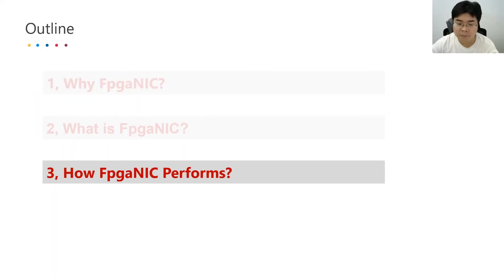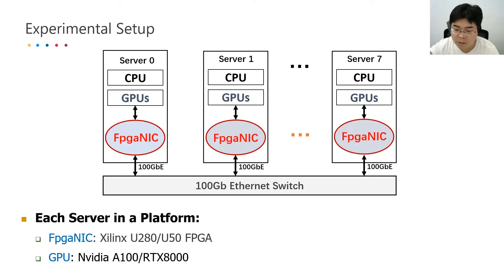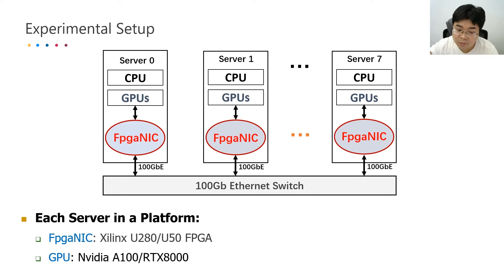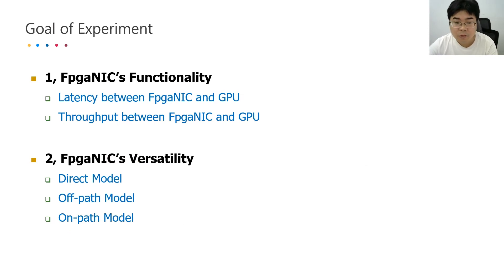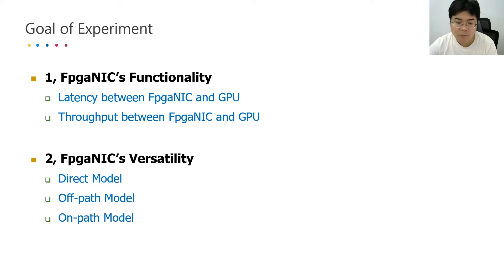Now let's talk about how FBGNIC performs. We run our experiments in a small cluster consisting of eight servers. Each server has a Xilinx FPGA and an NVIDIA GPU. We implement FBGNIC in a Xilinx FPGA U280 or U50, and the GPU is an NVIDIA A100 or RTX 8000. The goal of our experiments is twofold: first, validate FBGNIC's functionality (latency and throughput between FBGNIC and GPU); second, validate FBGNIC's versatility across the directory, off-path, and on-path models.